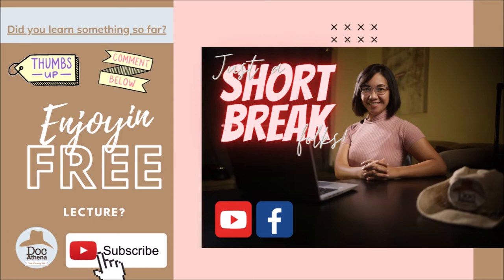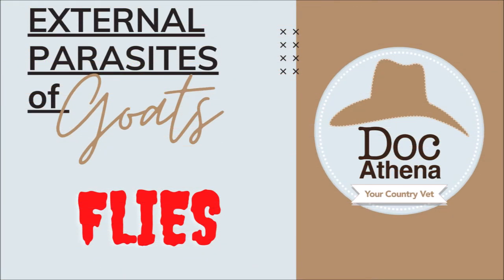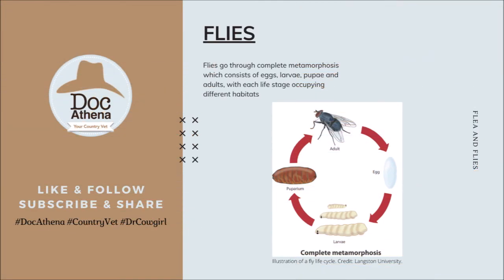Now let's go back to work and talk about flies. Flies go through complete metamorphosis, which consists of eggs, larvae, pupa, and adults, with each life stage occupying different habitats. We have a photo here of the life cycle, and I would like to thank Langston University for this illustration of the fly life cycle.